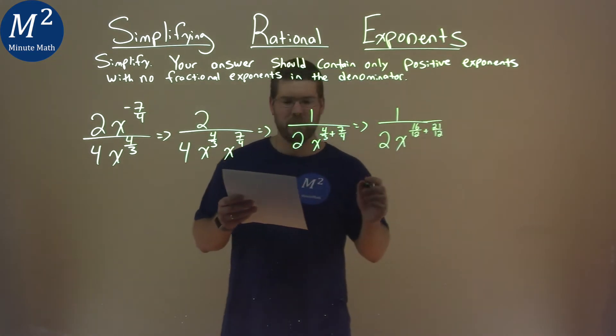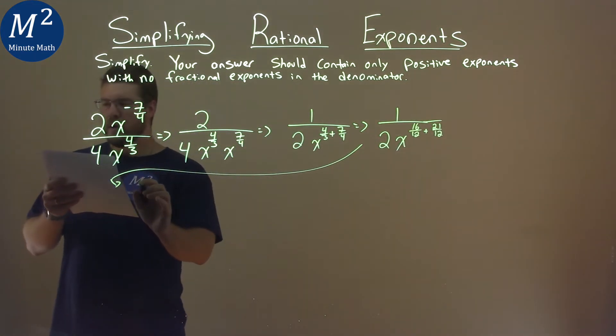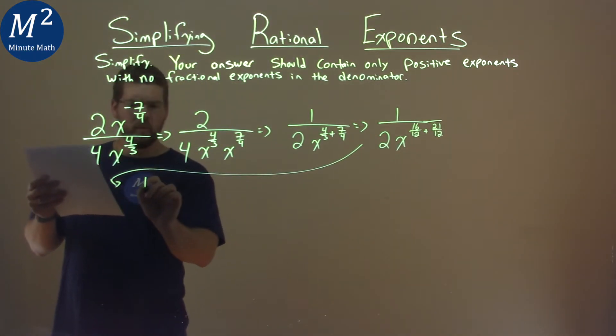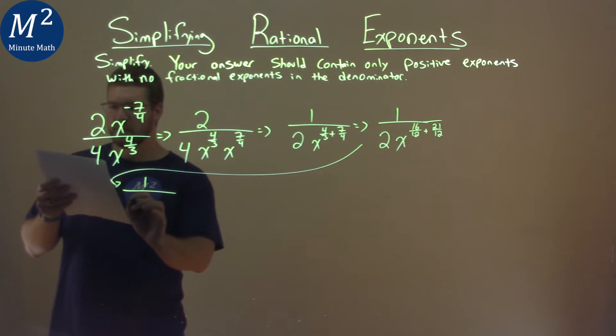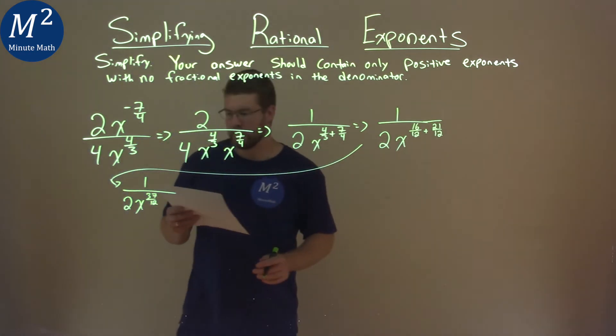We add them together, and then I'll put that work over here so you can see it. We have 1 over 2x to the 37th power over 12. So 16 plus 21 is the 37th power.